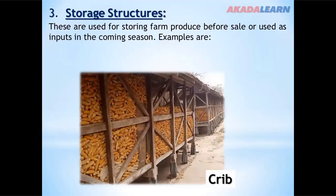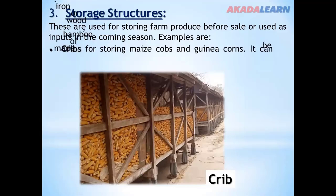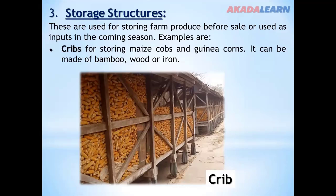Examples of storage structures include the cribs. Cribs are used for storing maize, cobs and guinea corn. They can be made of bamboo, wood or iron.